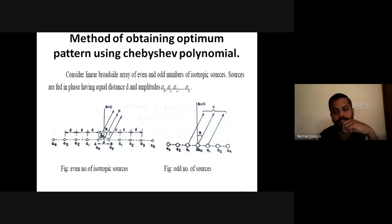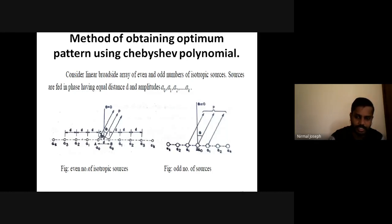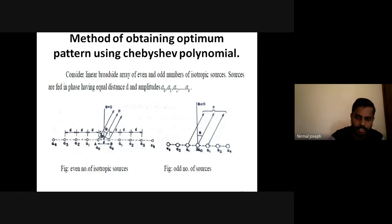For an odd number of sources, if we have an even number we can arrange equally on both sides with no issue. But for an odd number, the first element is placed at the center, and its amplitude is doubled to compensate for having only a single element there. The remaining elements are placed equally on both sides — so one element is at the center and all others are placed symmetrically.